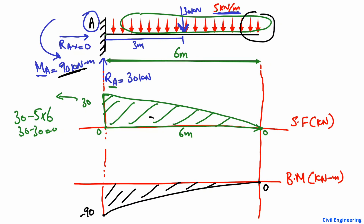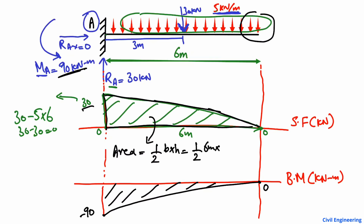In the second method, we find the area of the shear force diagram. The shear force diagram is a triangle with base 6 meters and height 30 kN. The area equals half times base times height: half times 6 times 30 equals 90 kN·m. This confirms the bending moment at point A is 90 kN·m. It then comes to zero at point B, the free end, where there is no support.